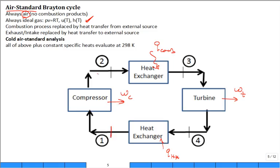We label four states consistent with the textbook: state 1 is the inlet to the compressor, state 2 exits the compressor, state 3 exits the combustor, and state 4 exits the turbine. So we have four states, four components, and four major possible heat and work transfers. For a cold air standard analysis, constant specific heats are evaluated at 25°C — 298 K, or approximately 300 K — so students don't need to interpolate. The difference in specific heats between 298 and 300 K is negligibly small.